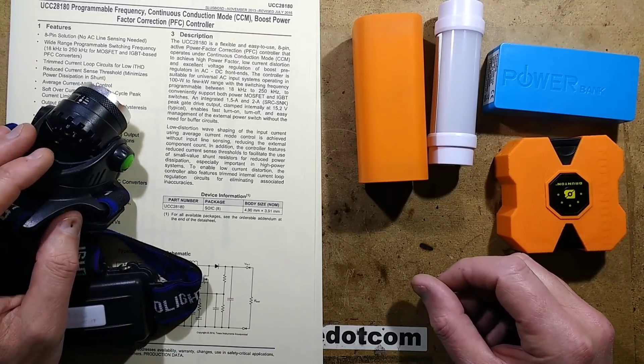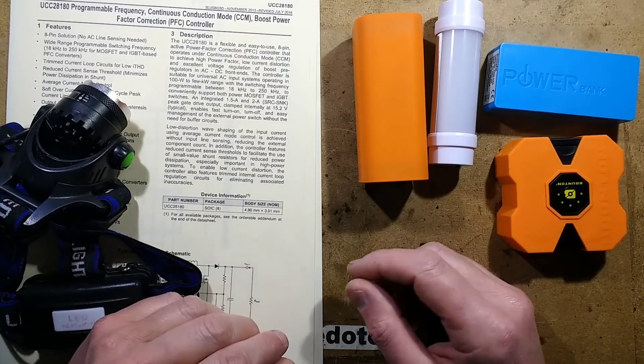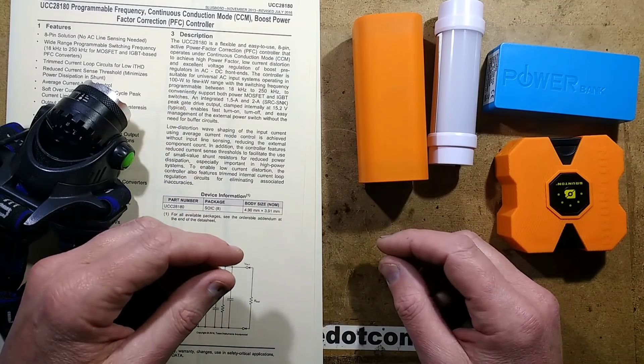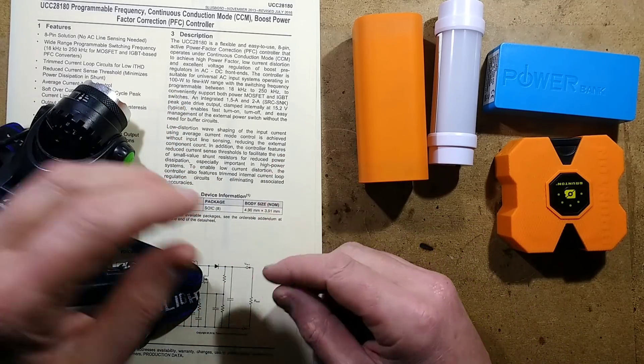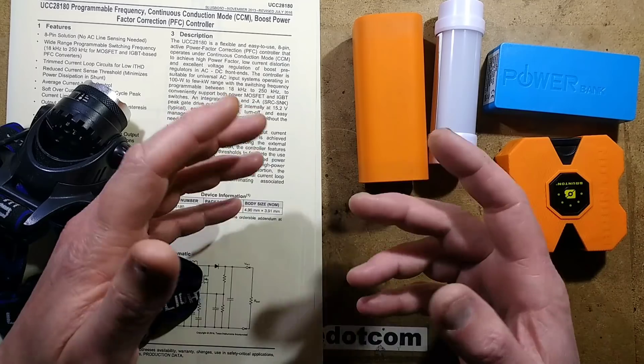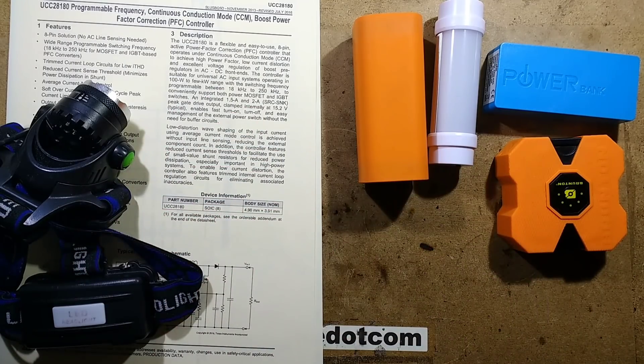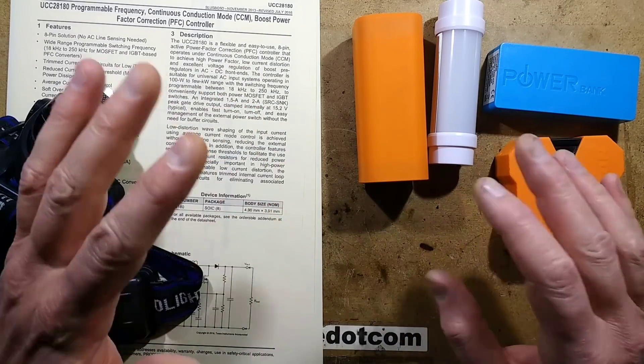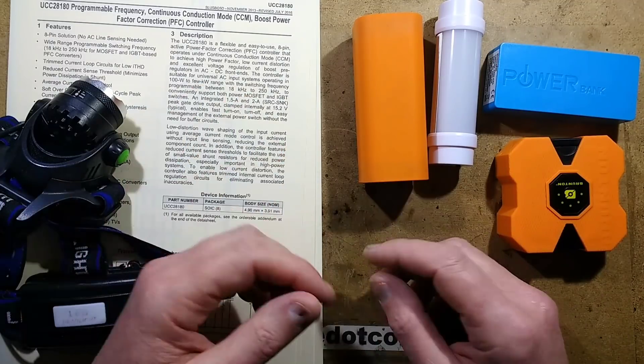This video is sponsored by Texas Instruments as part of a campaign they're running called A Day Without Power Management to raise awareness of their range of power management integrated circuits. As part of that, they've approached a few vloggers and said, how would you fare if the power went off one day, how would you manage?